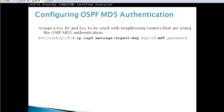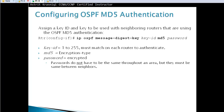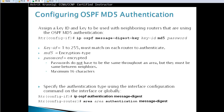Configuring OSPF MD5 authentication: first assign a key ID and the key to neighboring routers. Go to the interface and use 'ip ospf message-digest-key [key-ID] md5 [password]'. The key ID can be anything from 1 to 255 but must match on each router. MD5 means the password is encrypted. Passwords do not have to be the same throughout the area, but must match between neighbors. Maximum 16 characters. Authentication type can be specified per interface or globally — either 'ip ospf authentication message-digest' on the interface, or 'area [area] authentication message-digest' globally.